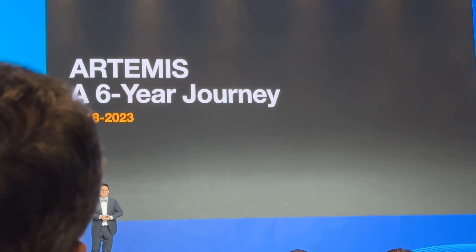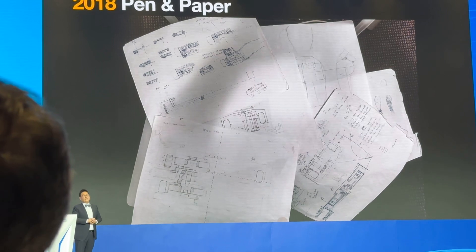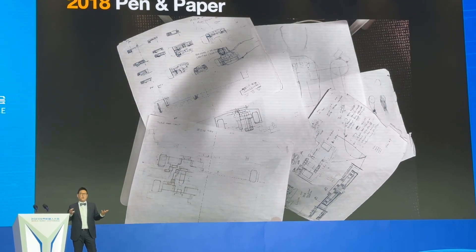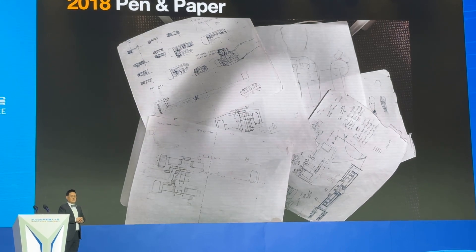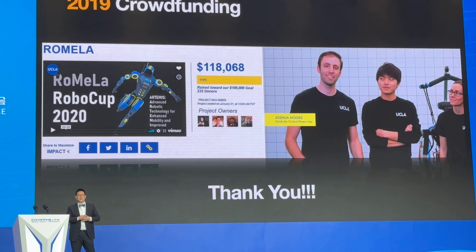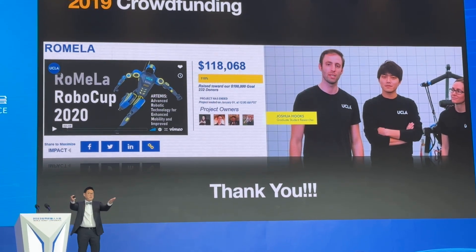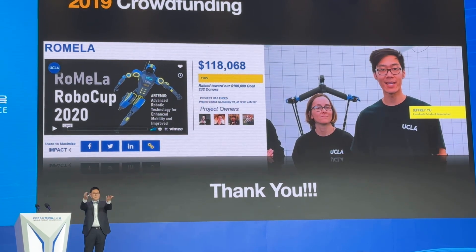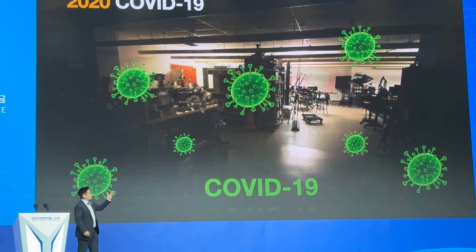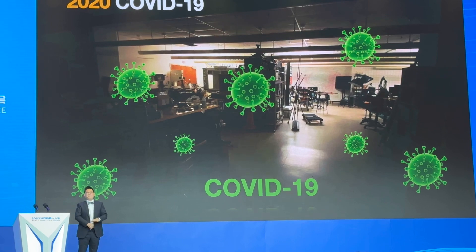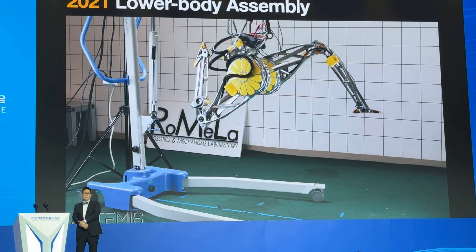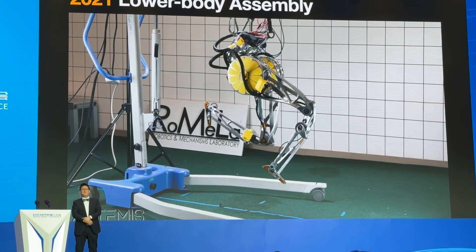Let me show you some of the history of Artemis — it's been a six-year journey. We started in 2018 with pen and pencil and paper, quick sketches and preliminary calculations. It looked like the math supported what we believed could be done. We needed funding, and unlike our other funded research projects, we raised it through crowdfunding via the UCLA Spark Fund campaign, raising $118,000. In 2020, COVID-19 hit and we had to close our lab, but we didn't stop — we did distributed research via Zoom. In 2021, we assembled the first lower body.